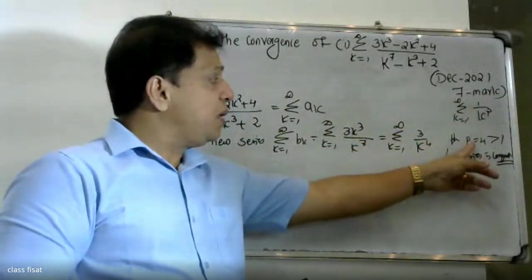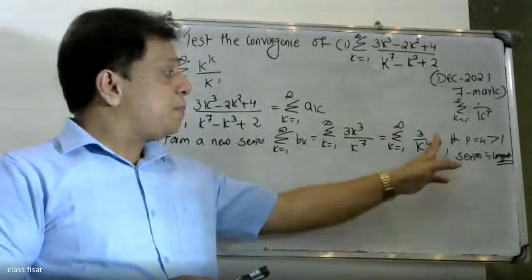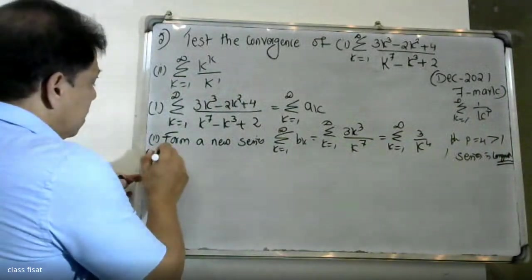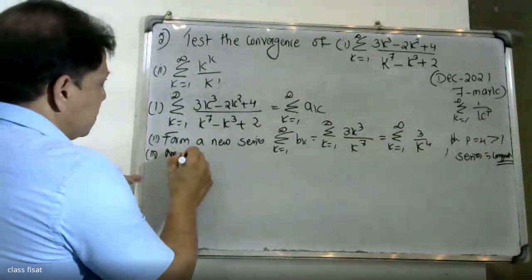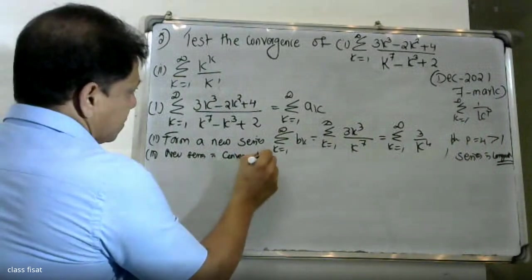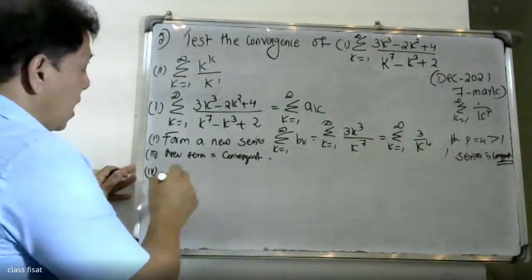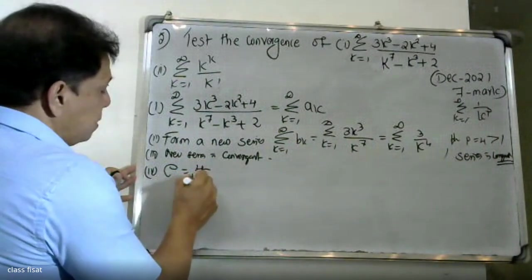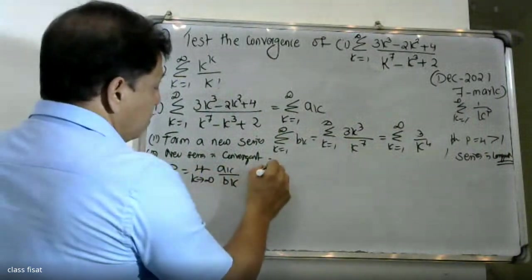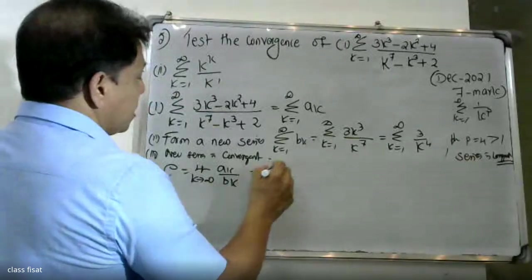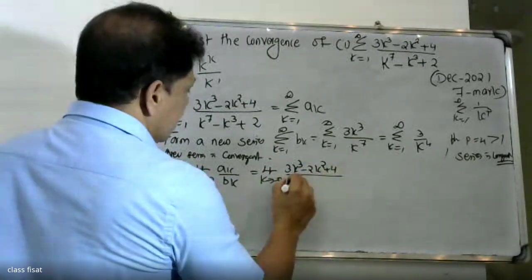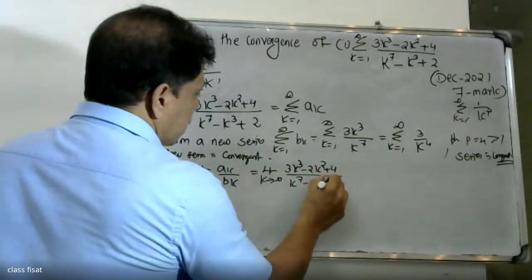The series is to be tested for convergence. We apply the limit comparison test. We calculate the formula for ρ: the limit as k tends to infinity of aₖ divided by bₖ, where aₖ equals (3k³ - 2k² + 4) divided by (k⁷ - k³ + 2).